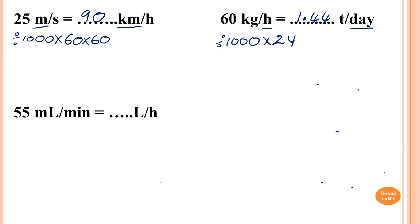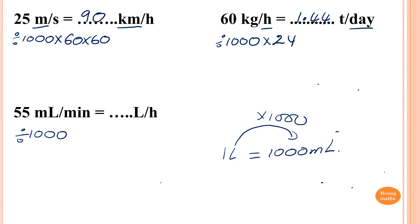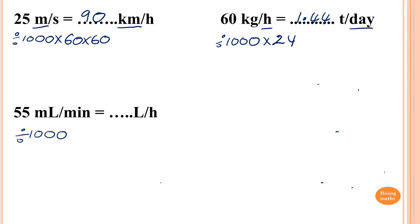This one: 55 milliliters per minute, convert to liters per hour. From milliliters to liters, I divide by 1,000, because 1 liter equals 1,000 milliliters. We're going backwards, so I divide by 1,000. But because the first process is divide, the second one for minute to hour must be times. So I times by 60. So: 55 divided by 1,000, then times 60. The answer is 3.3. So 55 milliliters per minute equals 3.3 liters per hour.